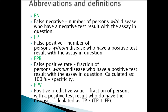Here are some abbreviations and definitions used in this presentation. FN means false negative — the number of persons with disease who have a negative test result. FP is false positive — the number of persons without disease who have a positive result. FPR or false positive rate is the fraction of persons without disease who have a positive test result, calculated as 100% minus specificity. PPV or positive predictive value is the fraction of persons with a positive test result who do have the disease, calculated as true positive divided by true positive plus false positive.